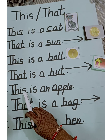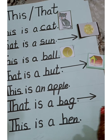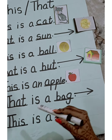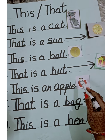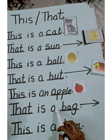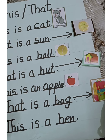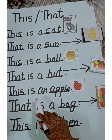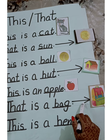Next is: this is an apple. The apple is near to us. Next is: that is a bag. The bag is far from us, so we will use 'that' because here I have put one arrow: that is a bag.